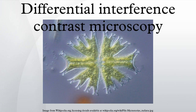A relatively complex lighting scheme produces an image with the object appearing black to white on a grey background. This image is similar to that obtained by phase contrast microscopy but without the bright diffraction halo.